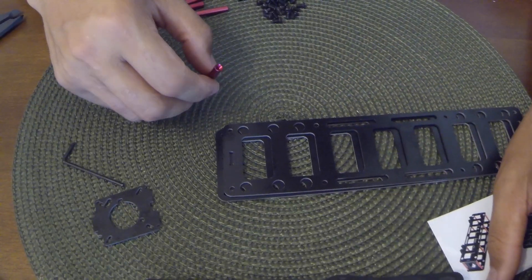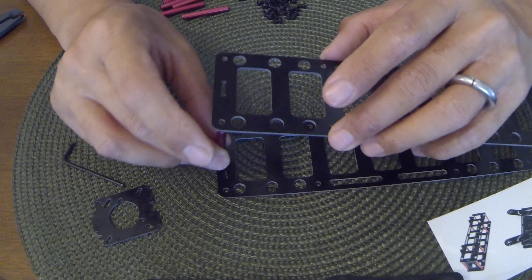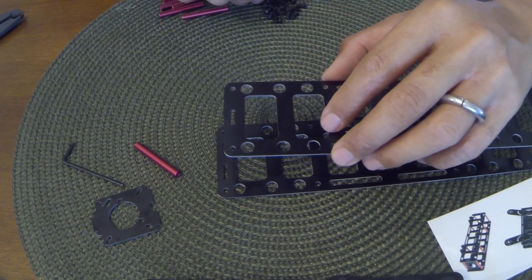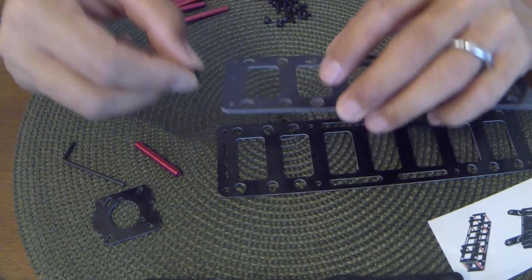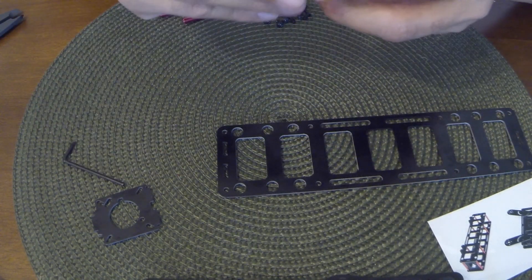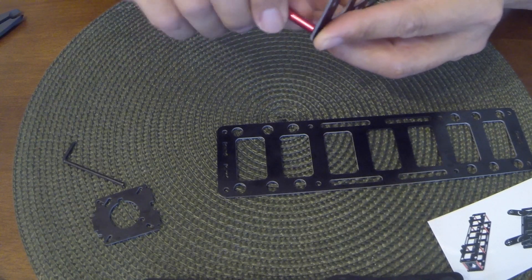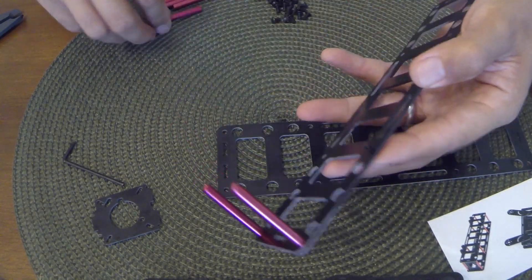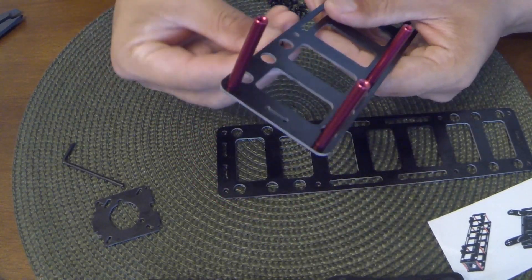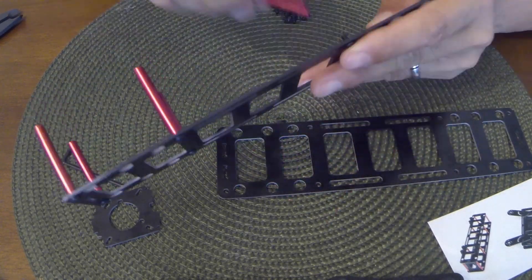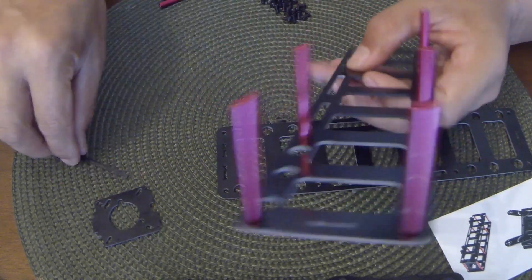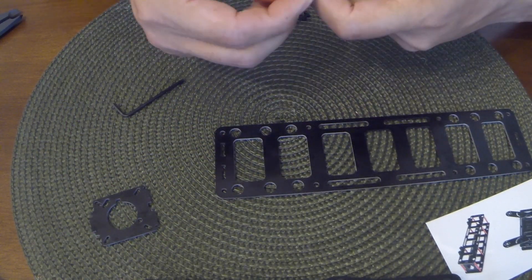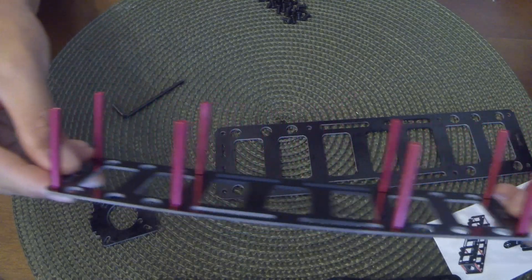So you're going to use the longer standoffs. I believe these are the 37mm. And the M3 screws. All the screws are the same length so you really don't need to worry about grabbing the right length. So we're going to attach eight of those to the top plate of the clean side. And here I'm just finger tightening them.